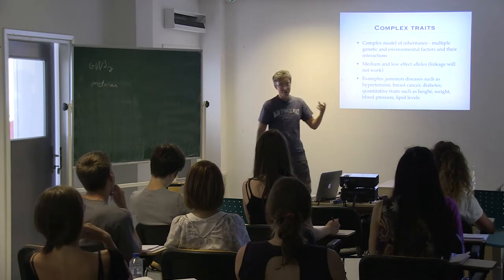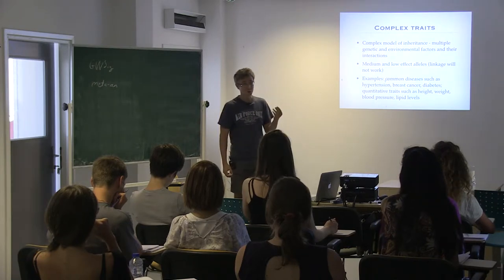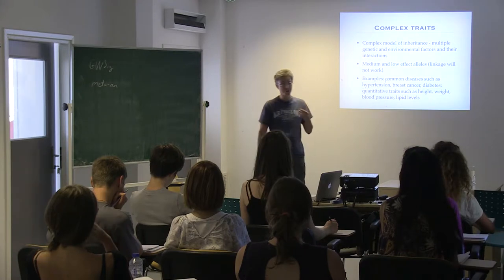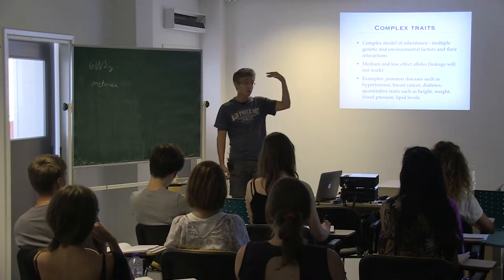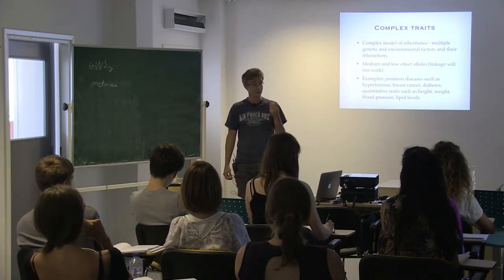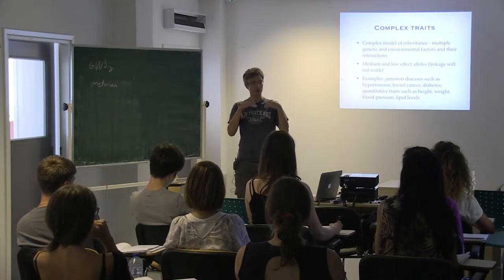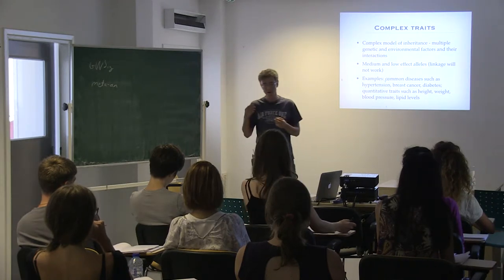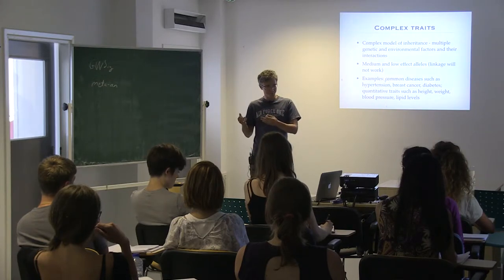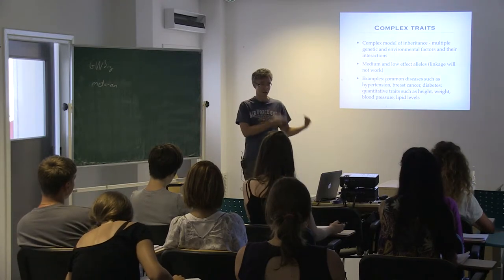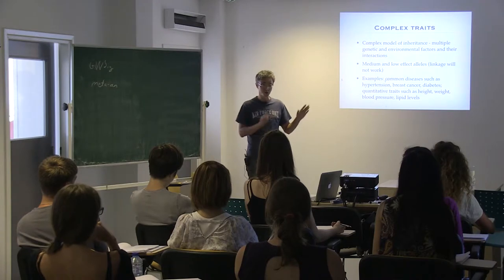With complex traits, we expect the alleles involved in control of the trait to have small or maybe medium effects. We're looking at something that increases risk by 1.1 — from 10% to 11%. If something increases risk from 10% to 15%, a factor of 1.5, that's already considered quite strong in complex genetics. For quantitative traits like height, the biggest known effect allele for general stature increases height by about two millimeters — you simply can't see the difference.